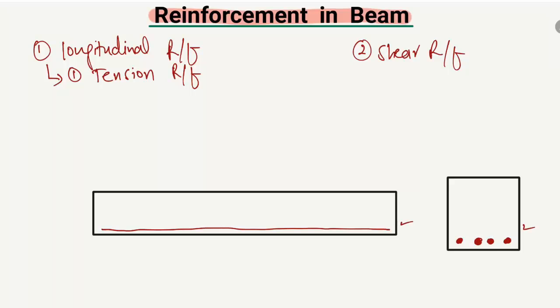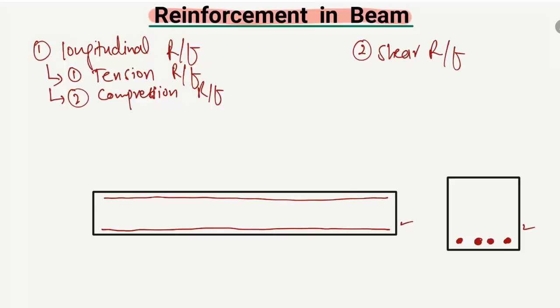These are the tension reinforcement. The second type of longitudinal reinforcement is the compression reinforcement. They are provided in the compression zone. In some beams, like in doubly reinforced beams, they are provided in order to increase the moment capacity of the beam. In the cross-section, they are provided like this.